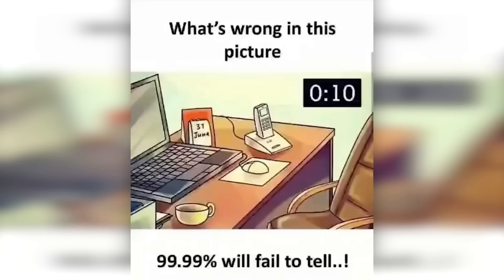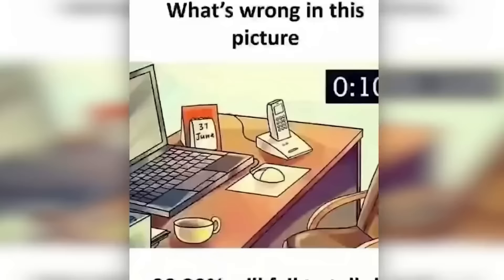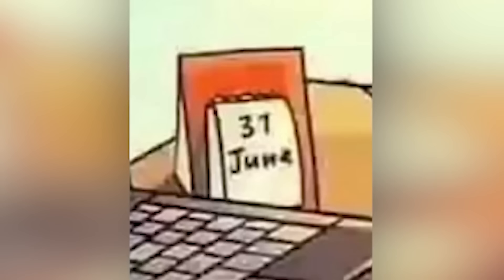There's something wrong with this photo here, but 99.99% of people won't be able to figure out what it is. Okay, you guys, so look really carefully and tell me if you can figure it out and comment what the mistake is in this picture if you're able to find it. Alright, so if you look at the calendar, you can see the date says June 37th, but June only has 30 days in it. If you're able to spot this, then you're a genius and congratulations.